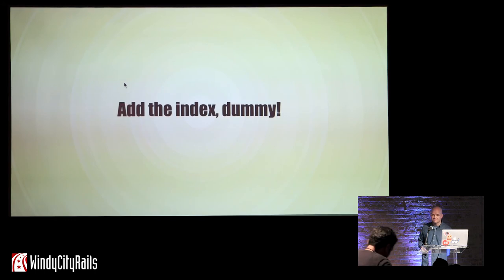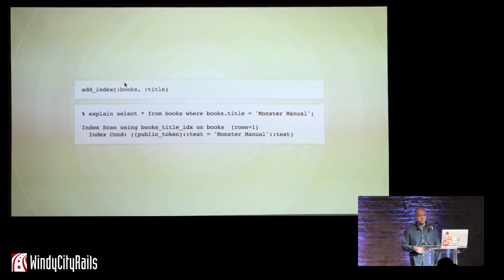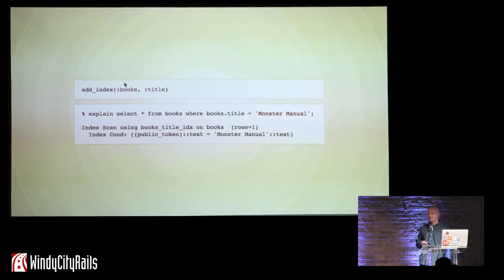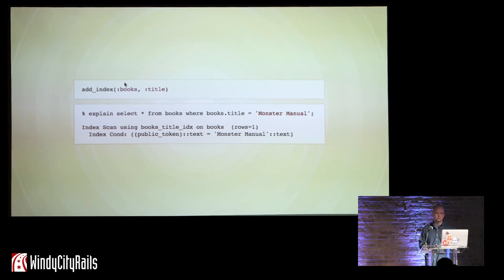The way we fix this is you just add the index. You can do this via a Rails migration easily with add_index. If you do that and then rerun the explain, you'll find that the sequential scan has been replaced by an index scan, and rows now equals 1. This query is fast — it won't slow your database down as your data set grows.